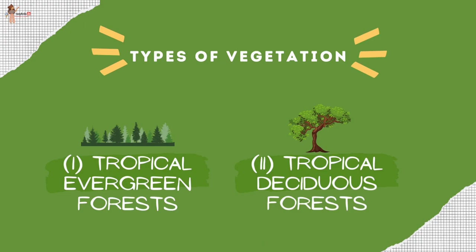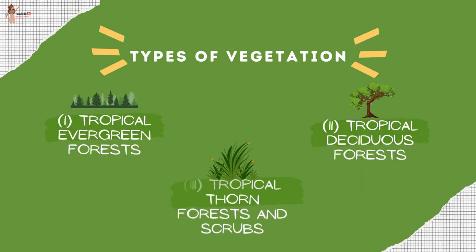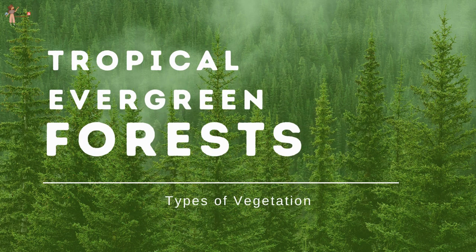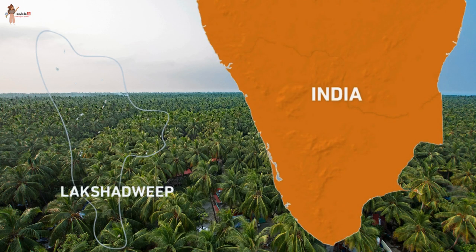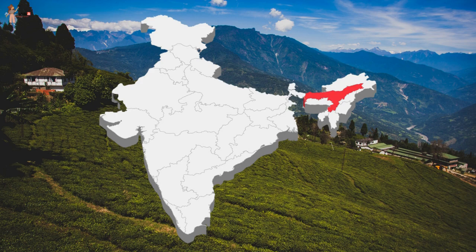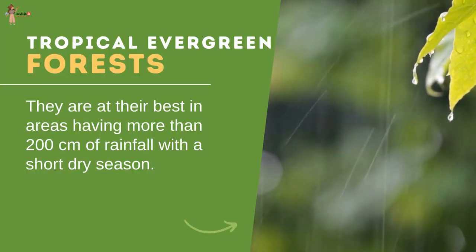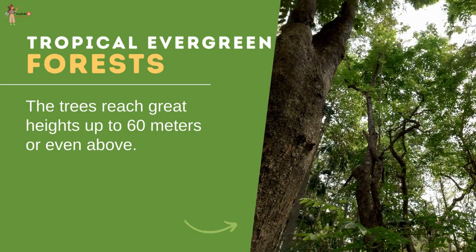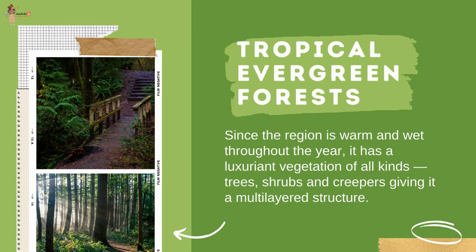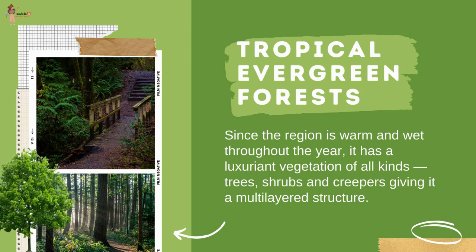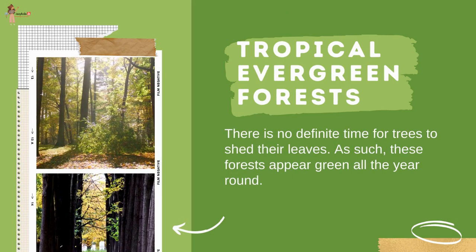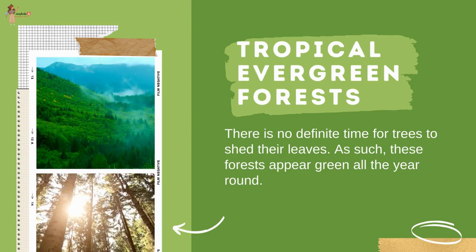The major types of vegetation in India are tropical evergreen forests, tropical deciduous forests, tropical thorn forests and scrubs, montane forests and mangrove forests. Tropical evergreen forests are restricted to heavy rainfall areas of the Western Ghats, Lakshadweep, Andaman and Nicobar islands, upper parts of Assam and the Tamil Nadu coast — best in areas with more than 200 cm of rainfall. Trees reach heights up to 60 meters or above, with a multi-layered structure of trees, shrubs and creepers. These forests appear green all year round as there is no definite time for trees to shed their leaves.